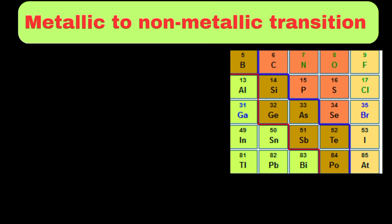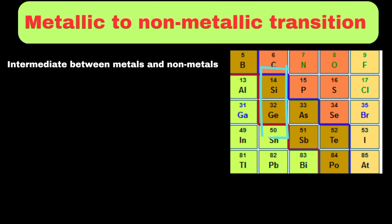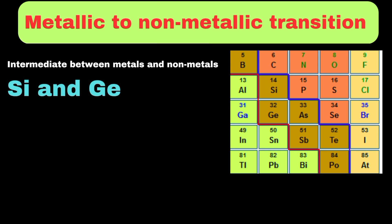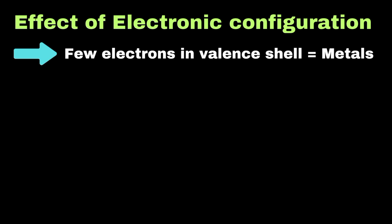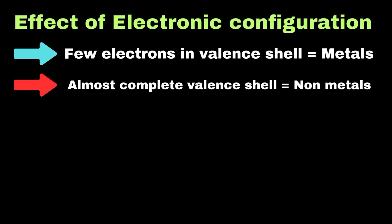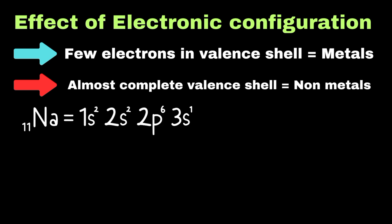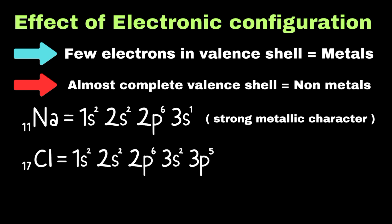Some elements, called metalloids, show properties intermediate between metals and non-metals. Elements like silicon and germanium can behave as either metals or non-metals depending on the conditions. These elements form a diagonal border in the periodic table, separating metals from non-metals. This transition isn't sudden but gradual, which is why boron shows some metallic properties despite being classified as a non-metal, while aluminum shows some non-metallic properties despite being a metal. Elements with few electrons in their outer shell tend to be metallic because they can easily lose these electrons to achieve a stable configuration. In contrast, elements with nearly full outer shells tend to be non-metallic as they prefer to gain electrons to achieve stability. For example, sodium with one outer electron exhibits strong metallic character, while chlorine with seven outer electrons shows strong non-metallic character. Noble gases, with their completely filled outer shells, show neither metallic nor non-metallic character — they are already stable and don't need to lose or gain electrons.